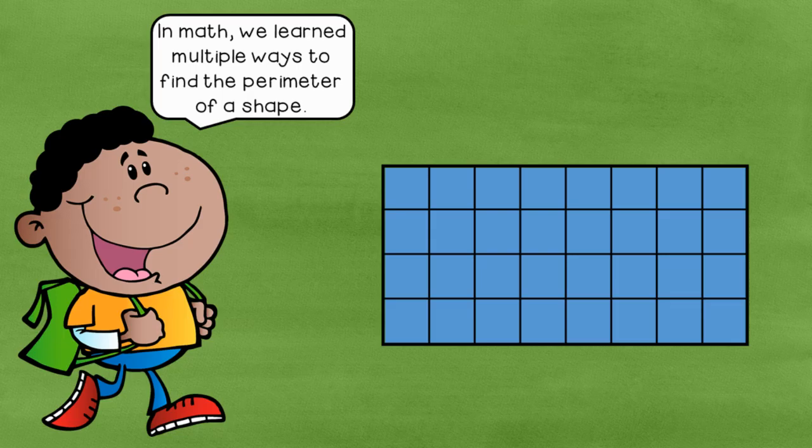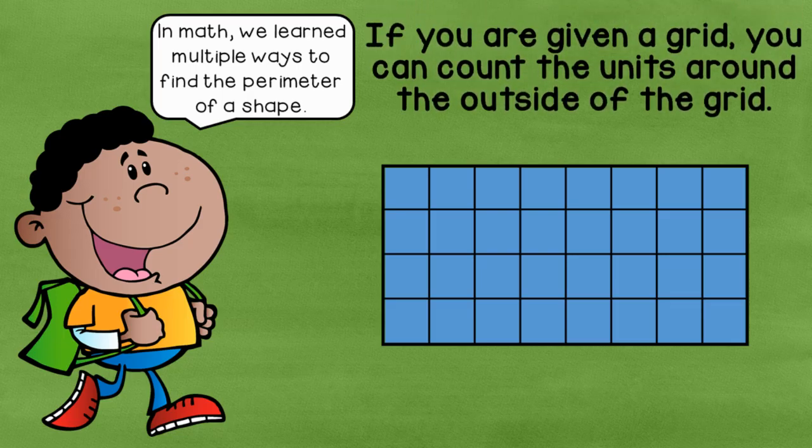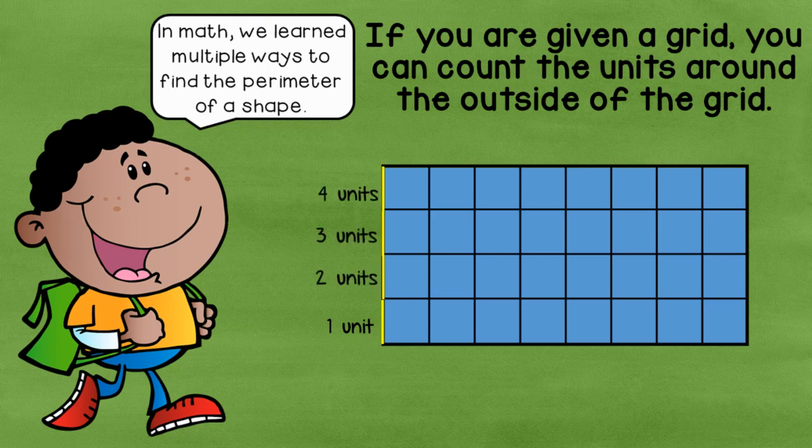Now if the shape happens to be in a grid with squares, you can simply count the units around the outside of the grid. Let's do that together. We start on the side. We've got one, two, three, four units. Then we go across the top. Five, six, seven, eight, nine, ten, eleven, twelve.